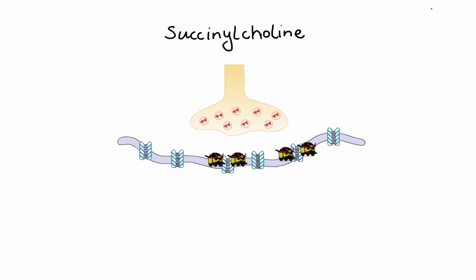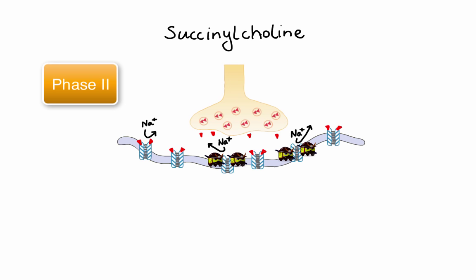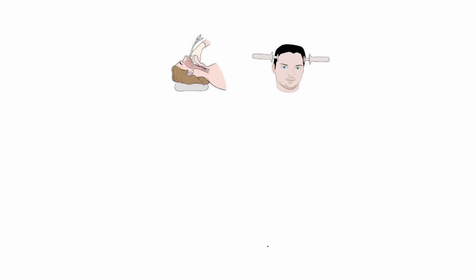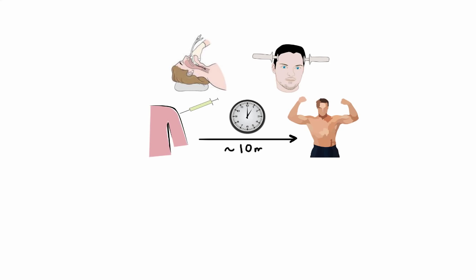Eventually, the sodium channel closes and the membrane repolarizes — this is referred to as phase 2 block. Succinylcholine has a rapid onset of action and is commonly used to facilitate rapid sequence endotracheal intubation in critically ill patients. It is also sometimes used to provide adequate muscle relaxation during electroconvulsive therapy. Following intravenous administration, succinylcholine causes complete muscle relaxation within 1 minute, with effects typically lasting up to 10 minutes due to rapid redistribution and hydrolysis by plasma pseudocholinesterase.